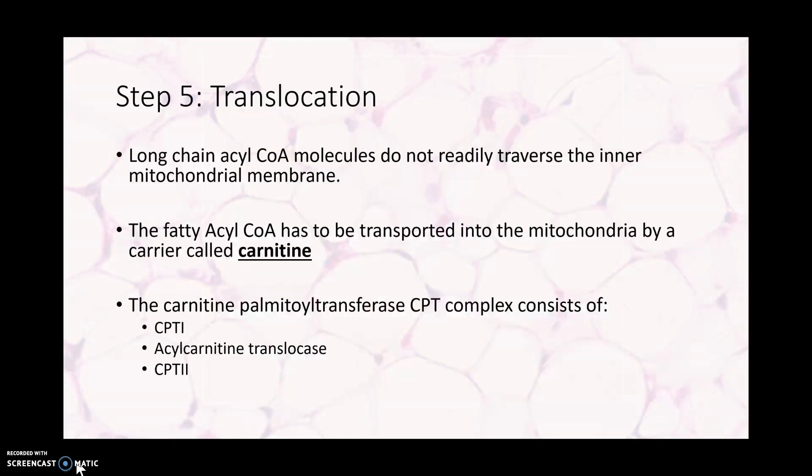Finishing into the last steps of lipolysis, and then we'll finish up by talking about protein metabolism. The next step of lipolysis is translocation. These long-chain acyl-CoA molecules don't easily traverse the inner mitochondrial membrane. So ultimately they can't just come in themselves and be let into the mitochondria so we can use them to produce ATP. So these fatty acyl-CoA molecules have to be transported into the mitochondria by a carrier called carnitine.